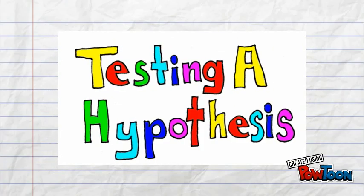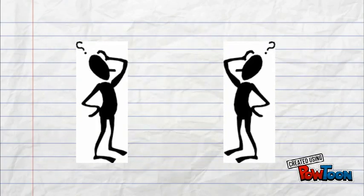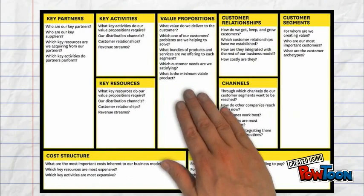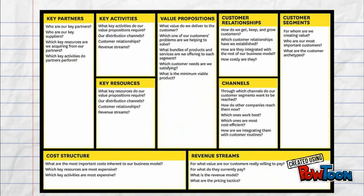Hypotheses are tested with a series of experiments to figure out if they are correct or not. Feedback received should relate back to all elements of the business model canvas.